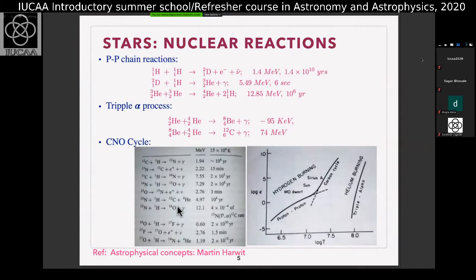Let us recollect. We found the amount of energy leaving the Sun per unit time. We asked what process gives that kind of energy and concluded nuclear reaction would be sufficient. The nuclear reaction targeted was four hydrogen atoms joining to give helium, and we found the energy is sufficient — it can last a long time. Using 10% of the solar mass, you can sustain the luminosity for up to 10^10 years.